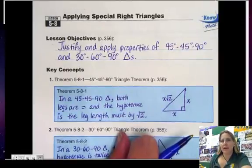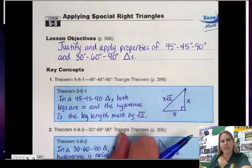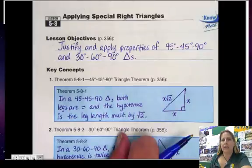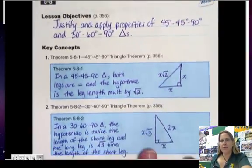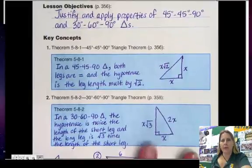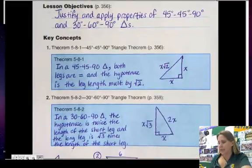We're going to do special right triangles today. 5-8 is the lesson. We're going to justify and apply properties of 45-45-90 and 30-60-90 triangles. So here are the two rules right here, and we're going to spend the rest of our time doing some examples.